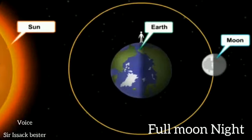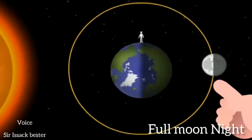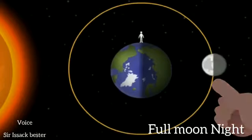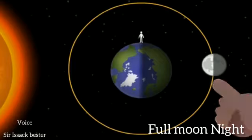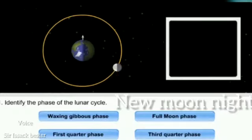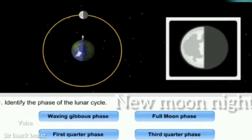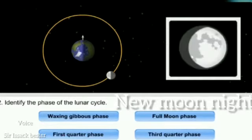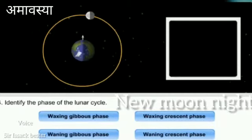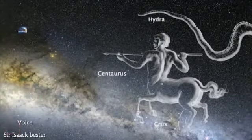What do you mean by full moon night? A night when the moon is visible from the earth as a full sphere is called the full moon night. A night when the moon is not visible at all in the sky is called the new moon night.